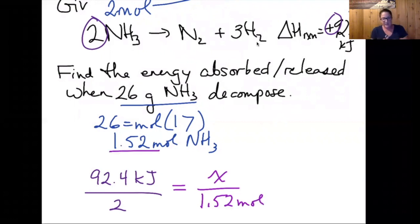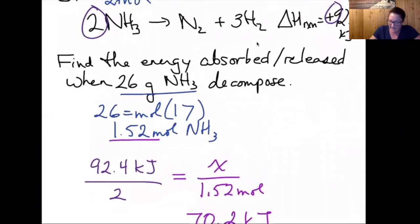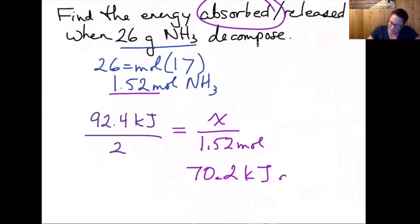So I'm going to cross multiply: 92.4 times 1.52 divided by 2 gives me X to be 70.2 kilojoules. And this is because it was a positive delta H reaction, it's an endothermic reaction, and 70.2 kilojoules are going to be absorbed.